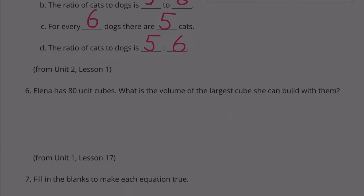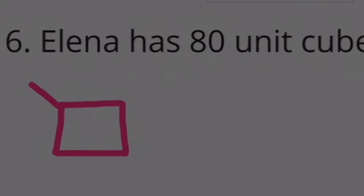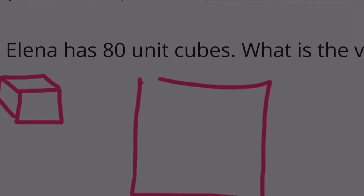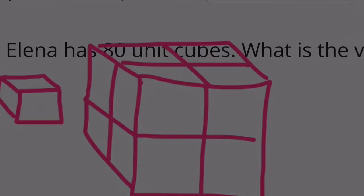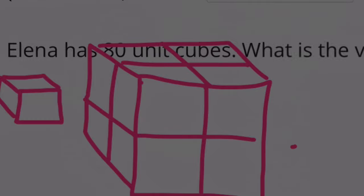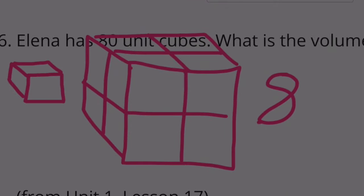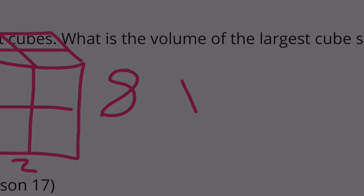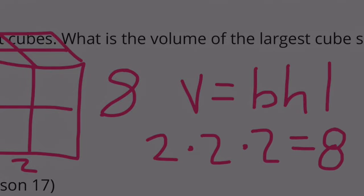Number six: Elena has 80 unit cubes. What is the volume of the largest cube she can build with them? She has 80 cubes and she's going to stack them up in stacks like this. This example has four cubes stacked up on the top and another four cubes stacked up on the bottom for a total of eight cubes. The dimensions are two by two by two. To find the volume, the volume is base times height times length. So two times two times two equals eight.